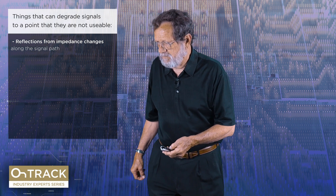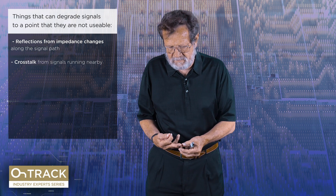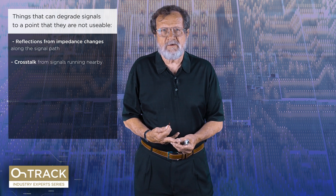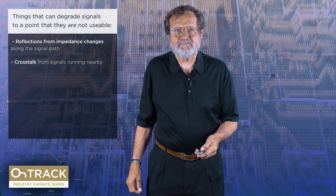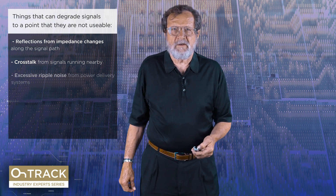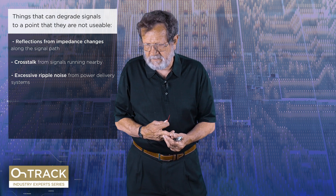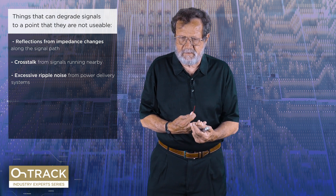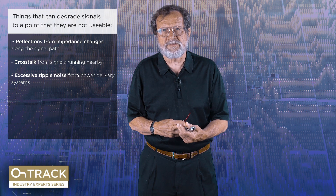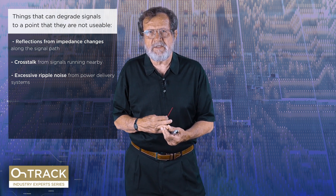Once we master that, the next thing we're likely to hit is crosstalk — signals running side by side, one interfering with the other. Then there's excessive ripple noise on the power delivery system, which can affect us two ways: the ripple can be large enough to degrade the logic signal itself, or it might escape the product and become EMI.